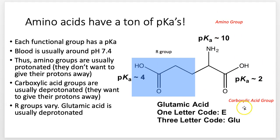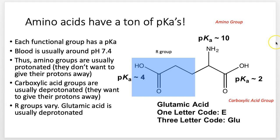The carboxylic acid group is an acid that wants to give up that hydrogen pretty readily. If you're in blood at pH 7, and the pKa is 2, then it's usually going to give up this hydrogen because the pKa of 2 means it is a stronger acid than the pH environment — the environment will readily accept that hydrogen. So usually when we see amino acids in biological systems, the carboxylic acid is deprotonated. The amino group is the opposite problem: with a pKa of 10, which is higher than pH 7, it would not lose its hydrogen in blood.